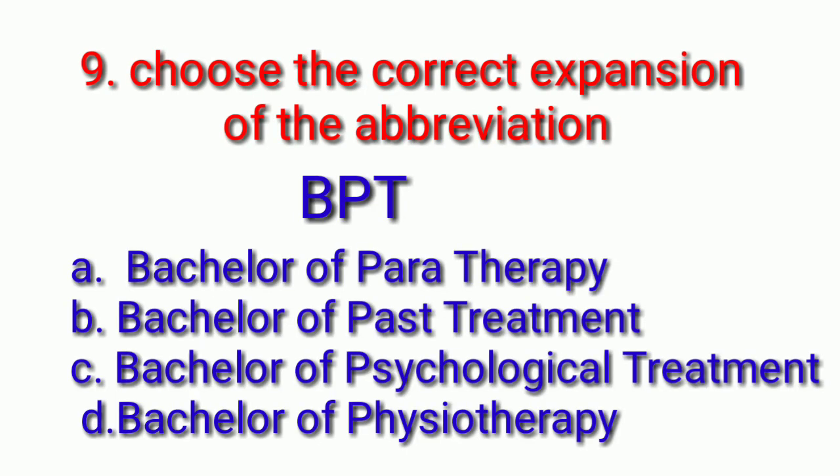Ninth question. Choose the correct expansion of the abbreviation BPT. So, BPT full form, you should find out. Your options are bachelor of paratherapy, bachelor of past treatment, bachelor of psychological treatment, bachelor of physiotherapy. So, BPT full form, what? Your countdown starts. Answer is bachelor of physiotherapy.